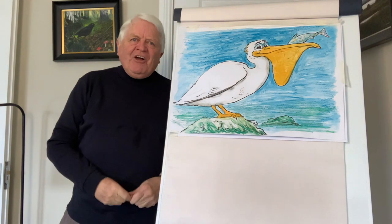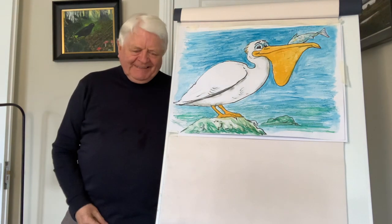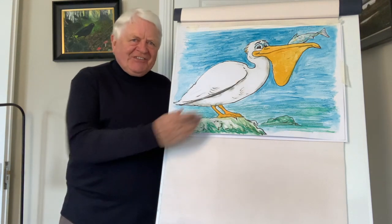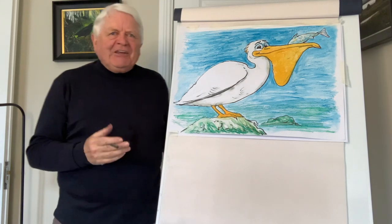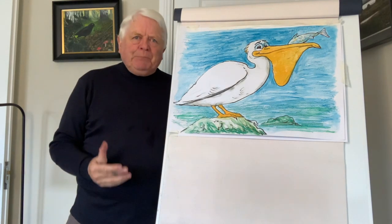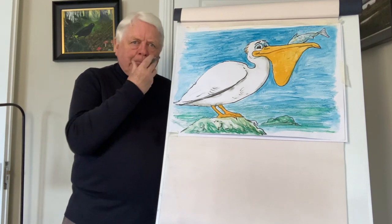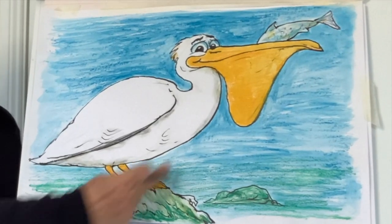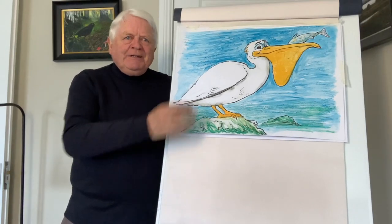Well hello again, Don Conroy here. You're very welcome to another draw with Don, and today as you can see we're going to draw a pelican. Now the pelican is a very heavy water bird. It's got a big long bill and it's got a big pouch underneath, like a net for catching the fish.